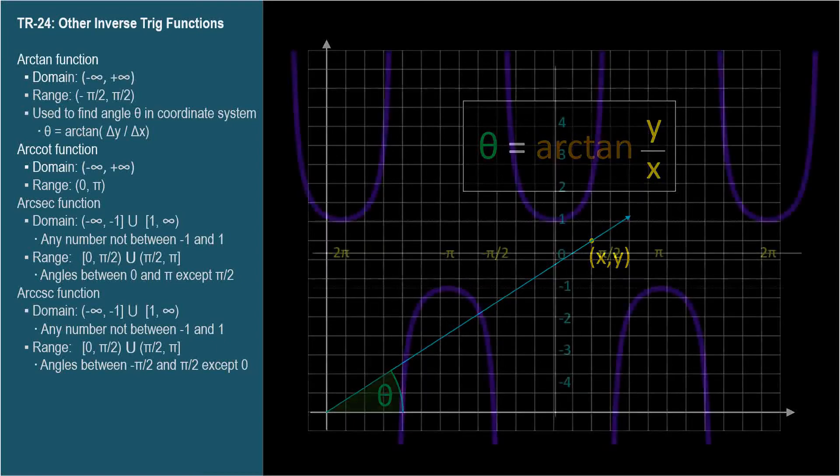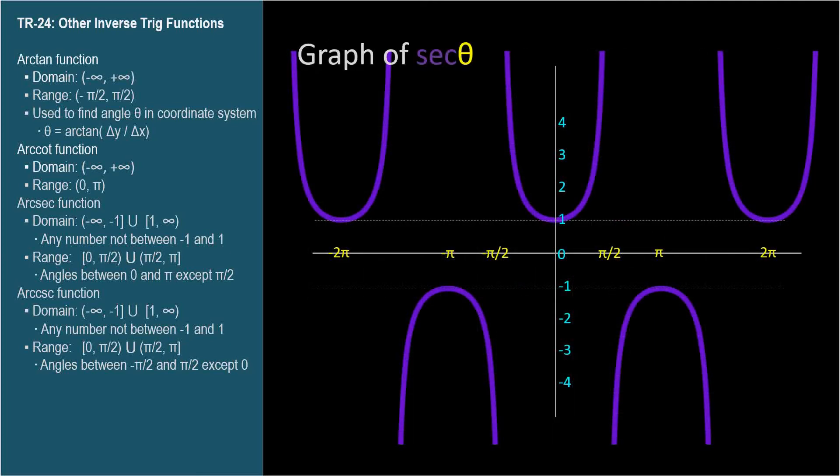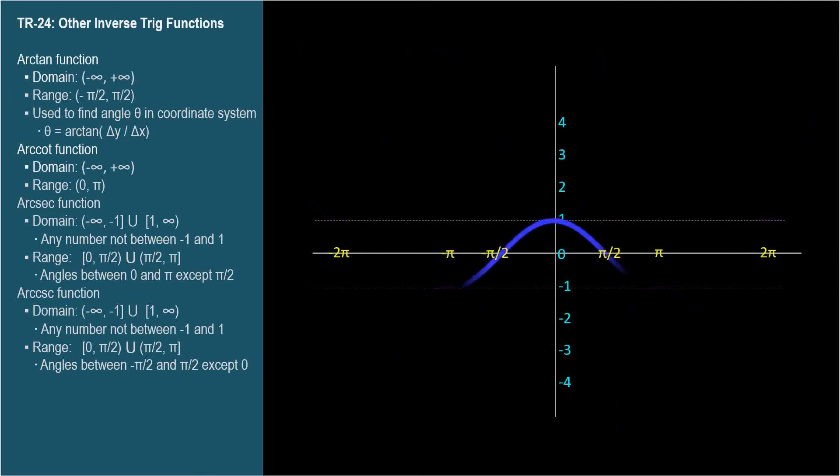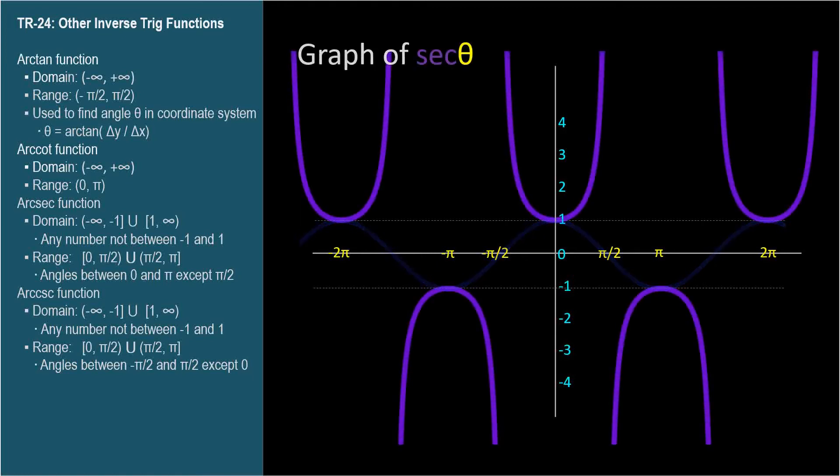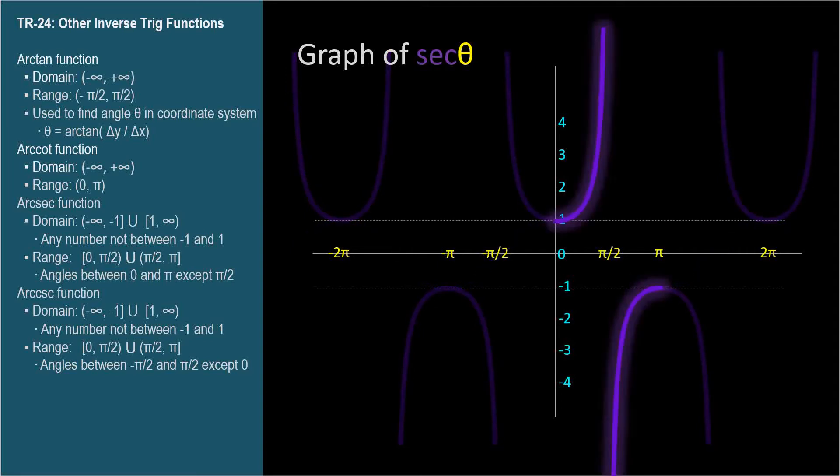Here's the graph of secant theta. When I need to sketch the secant graph, I start with the cosine graph, and remember they touch at the peaks because secant is 1 over cosine. You can use the same trick with cosecant and sine. It looks a little disconnected, but this part of the secant graph is used to define the range of arcsecant, which looks like this.